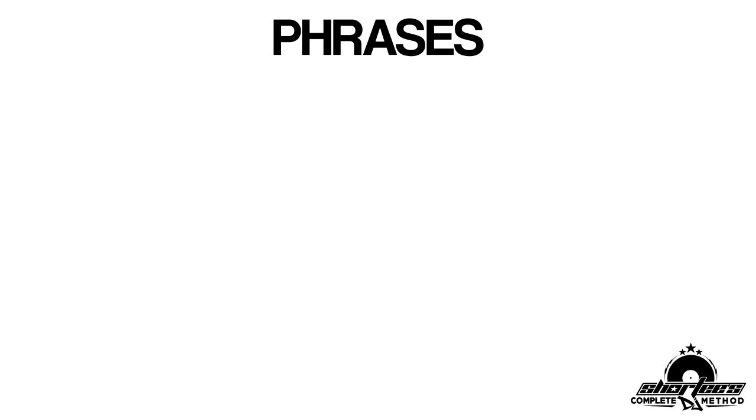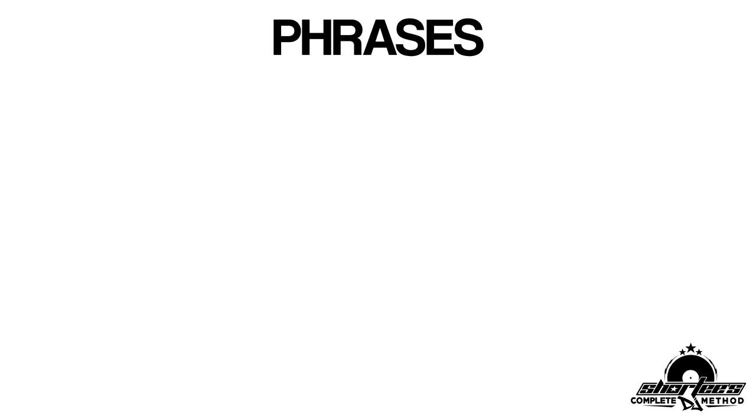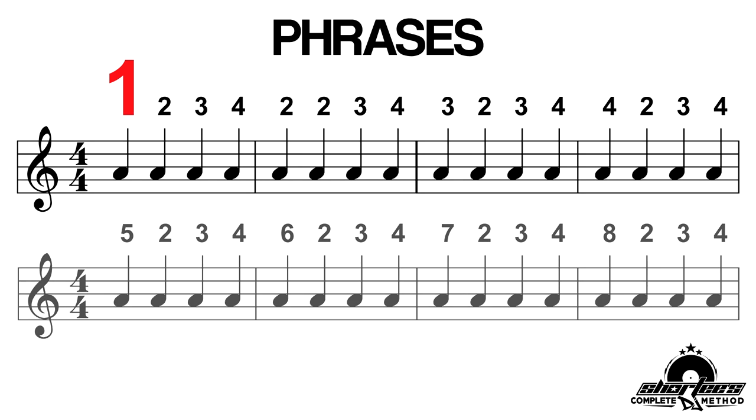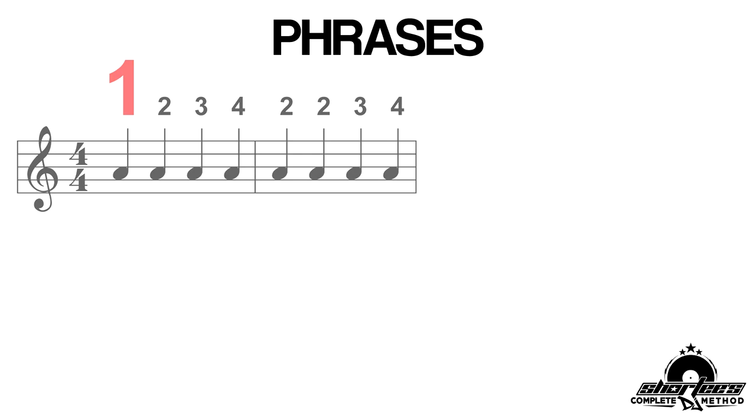So if you have the beats or the head nods being the letters, and then you have the bars being the words, then a series of bars makes up a phrase or a sentence. A phrase is a group of bars. The amount of bars in each phrase varies depending on what part of the song it is and what genre of music it is.